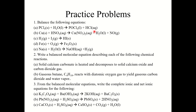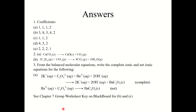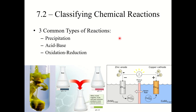Here are three practice problems to try. Pause the video, take 5 to 10 minutes, and see how well you understand the material from this section. For problem 3A, note that C2O4 is called oxalate — a polyatomic ion you have not seen before, with a charge of minus 2. Once you are ready, the answers are on the next slide. For B and C, see the chapter 7 group worksheet key. That concludes section 7.1 — see you in the next video when we begin section 7.2, classifying chemical reactions.